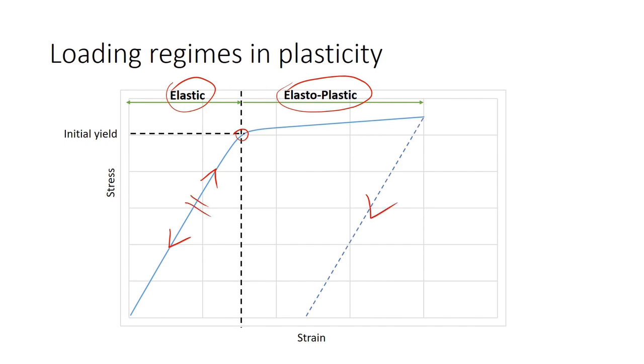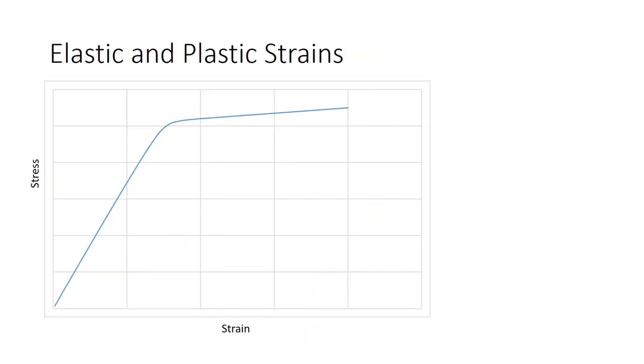Let's extend this argument to the strains. Let's say we loaded the material to a point A in the elasto-plastic region. Strain at A will be the sum of both elastic and plastic strains. Let me explain how to obtain them. Let's do an imaginary unloading from A. This was our initial strain, epsilon A.